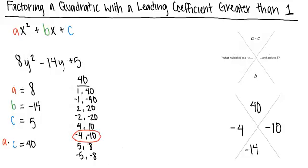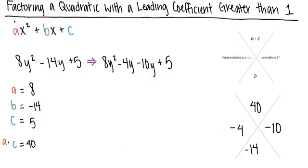Next, we can use these factors to rewrite our original quadratic. We rewrite this expression as 8y squared minus 4y minus 10y plus 5 using these factors that we determined to put into the middle of the expression.